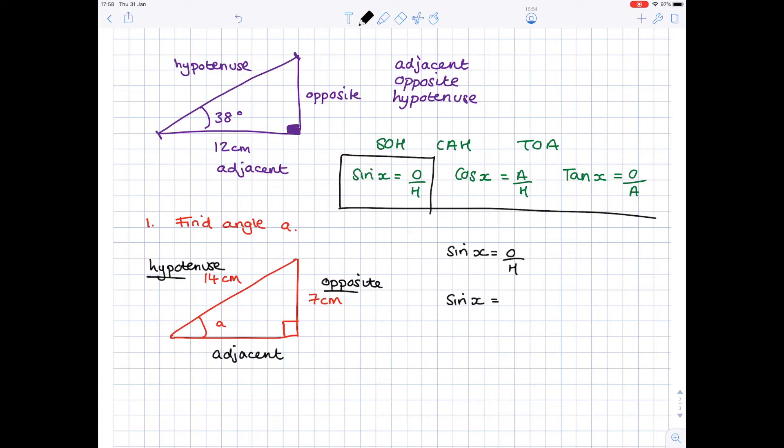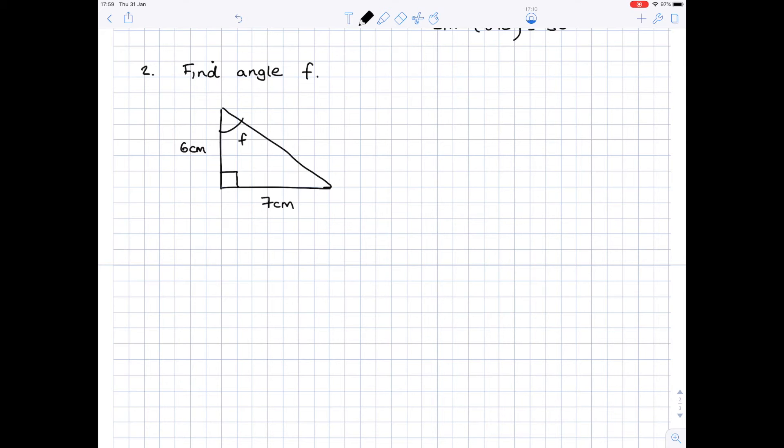We know our opposite is seven centimeters, our hypotenuse is 14, so sine x equals 0.5. Now you need to be careful with your calculator. You need to do an inverse sine on your calculator. So inverse sine 0.5, press equals and you'll get an angle, and I found out that my angle is 30 degrees.